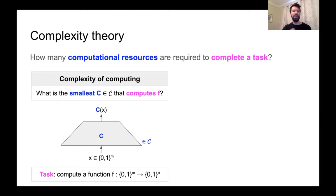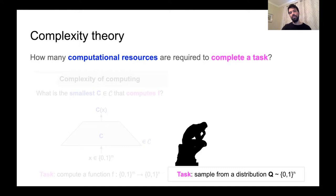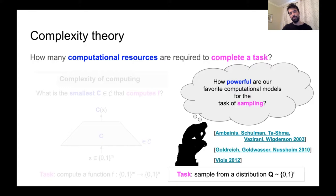Beyond the task of computing a function, another task that shows up a lot in computer science is sampling from a distribution. It's natural to wonder how powerful our favorite computational models are for the alternative task of sampling. Inspired by the works of Mbena, Shulman, Tashma, Vassarani, Braggersen, Goldreich, Goldwasser, and Nussbaum, Viola launched a systematic study into this question in 2012.